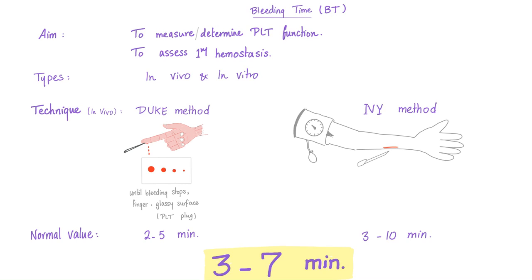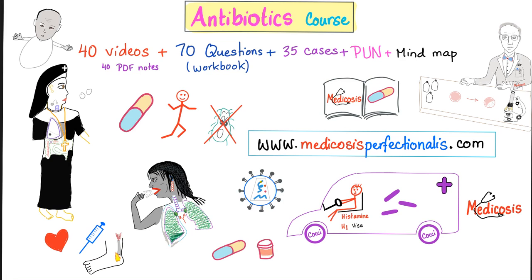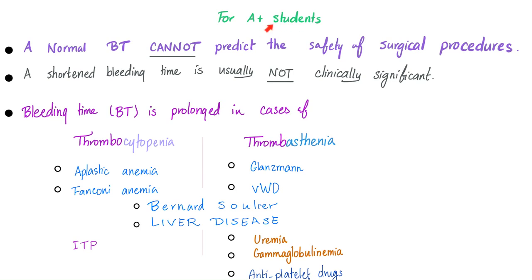The general normal bleeding time to memorize is 3-7 minutes. On exams, a patient with primary hemostasis problems will likely have a bleeding time greater than 10. A normal bleeding time cannot predict the safety of surgical procedures. A shortened bleeding time is usually not clinically significant. A bleeding time greater than 7 — especially greater than 10 — is a problem indicating primary hemostasis dysfunction.